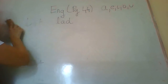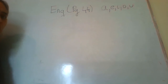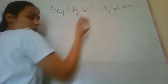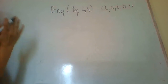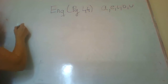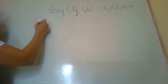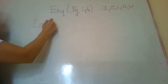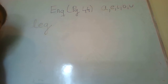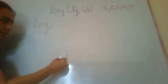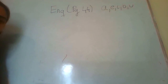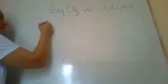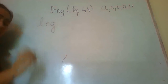Now let's check for some new words with the vowel E. The first word already written for us in the book is 'leg' — L-E-G. Now what we have to do is find some new words which have E in them.